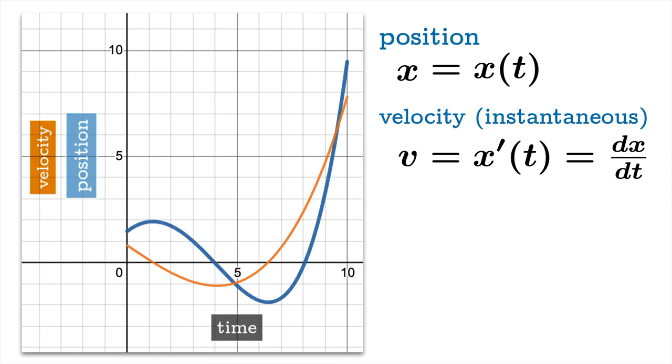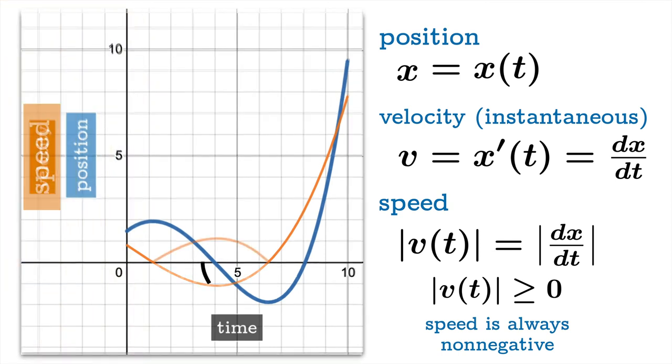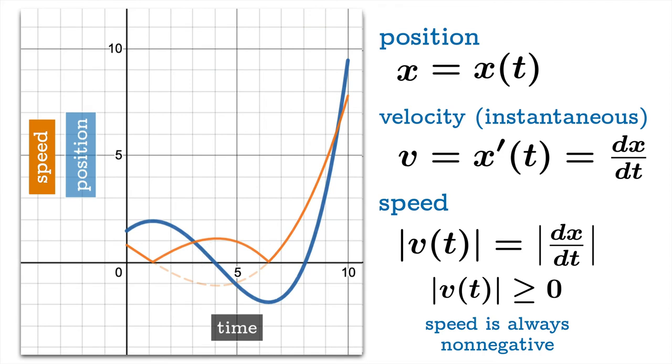Okay so here we have the velocity graph in front of us and what we want to do now is talk about a measure of how fast without regard to direction. So we're going to define the speed to be the absolute value of velocity. Now by its very definition speed is always non-negative. You can't possibly have a negative speed by definition because you take the absolute value of the velocity. So how do you get your speed graph? You just sort of bend up any portion of the velocity graph that was below the axis and voila you have your speed graph.